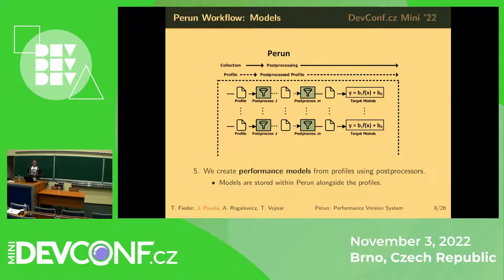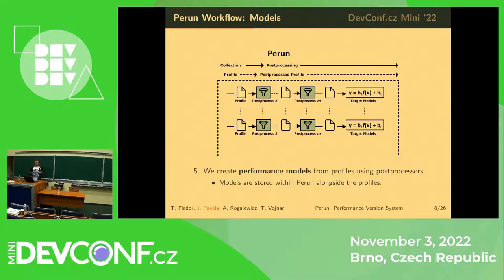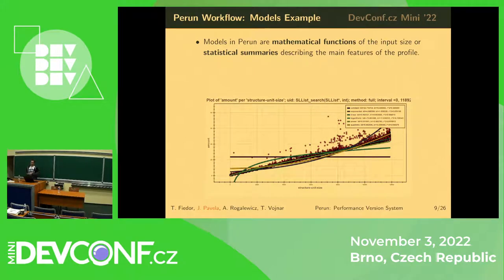Once you have the version control system and Perun set up, you measure your project's performance and obtain what are called profiles — files containing performance metrics regarding your software based on the inputs you tested on. A nice feature of Perun is that profiles are stored within its internal structure linked to corresponding VCS versions. So if you have a commit with some hash, Perun associates profiles with that hash — profiles collected when your project was in that version.